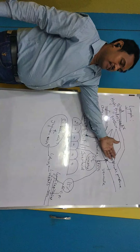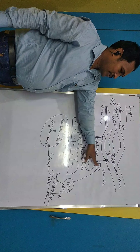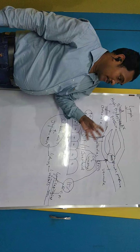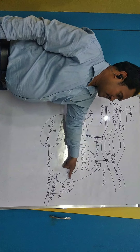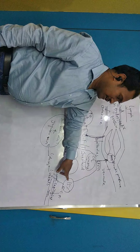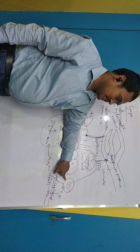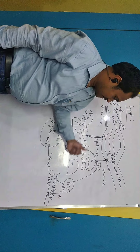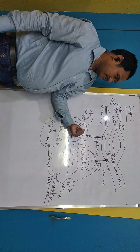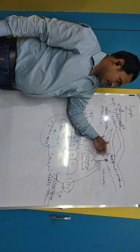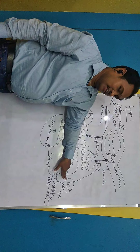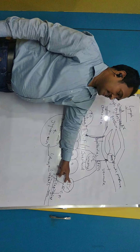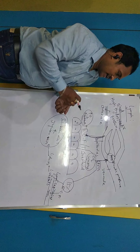Fluid moves from low osmotic pressure to high osmotic pressure, so fluid goes back into the vessel. Nearly 85 percent of the fluid that came out goes back. Still, about 15 percent of the fluid is left over. That leftover 15 percent ECF enters the lymph capillaries and is now called lymph.